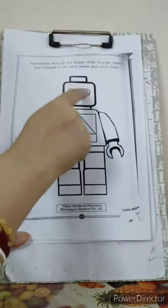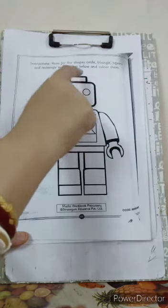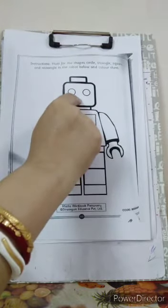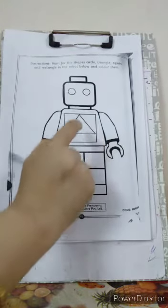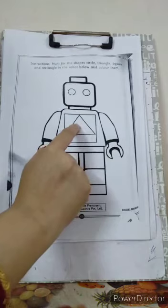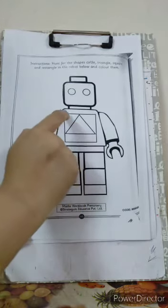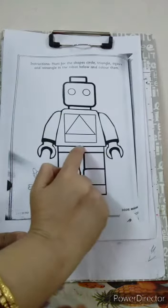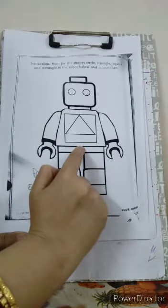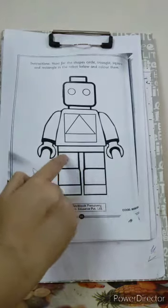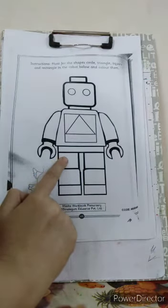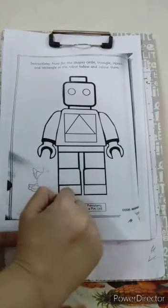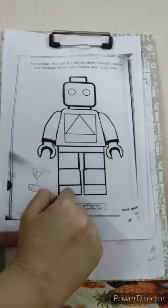Which shape is this? Circle. This one, rectangle. This one, square. This one, triangle. This one, square. This one, rectangle. This one, square. Square. This one, rectangle.